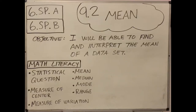Welcome back to another episode of Math with Mr. Young. Today we're going to be working on 9.2, the mean. Our standard is 6th grade statistics and probability, and our objective is that we're going to be able to find and interpret the mean of a data set.